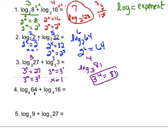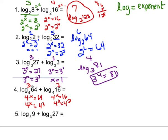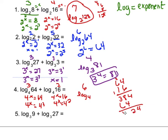On this next one: 4 to the what equals 64 — 64 is 4 to the third, so that's 3. Then 4 to the what equals 16: 4 to the x equals 4 to the second, so that's 2. 3 plus 2 is 5... actually that's going to be 6. So that's the same thing as log₄(64 × 16). 64 times 16 is 1024, and you can check that 4 to the sixth power equals 1024.